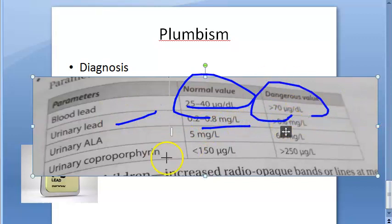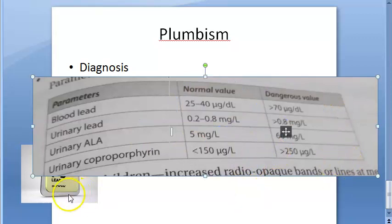Urinary ALA also can be there, that is aminolevulinic acid. Urinary coproporphyrin also can be there normally. So they are saying dangerous values are there. These are values if you want you can remember.